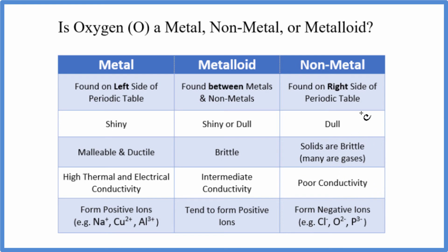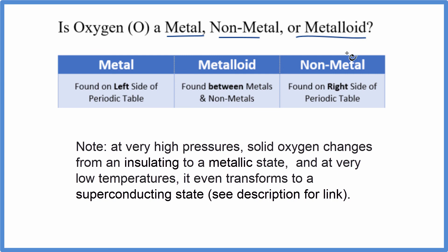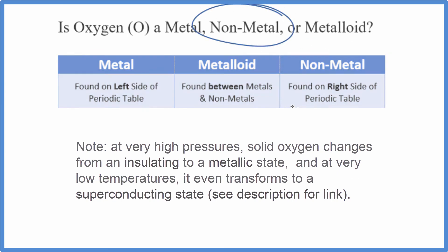When oxygen forms ionic bonds, it forms a negative ion. This is Dr. B answering the question whether oxygen is a metal, nonmetal, or metalloid — it is a nonmetal. Thanks for watching.